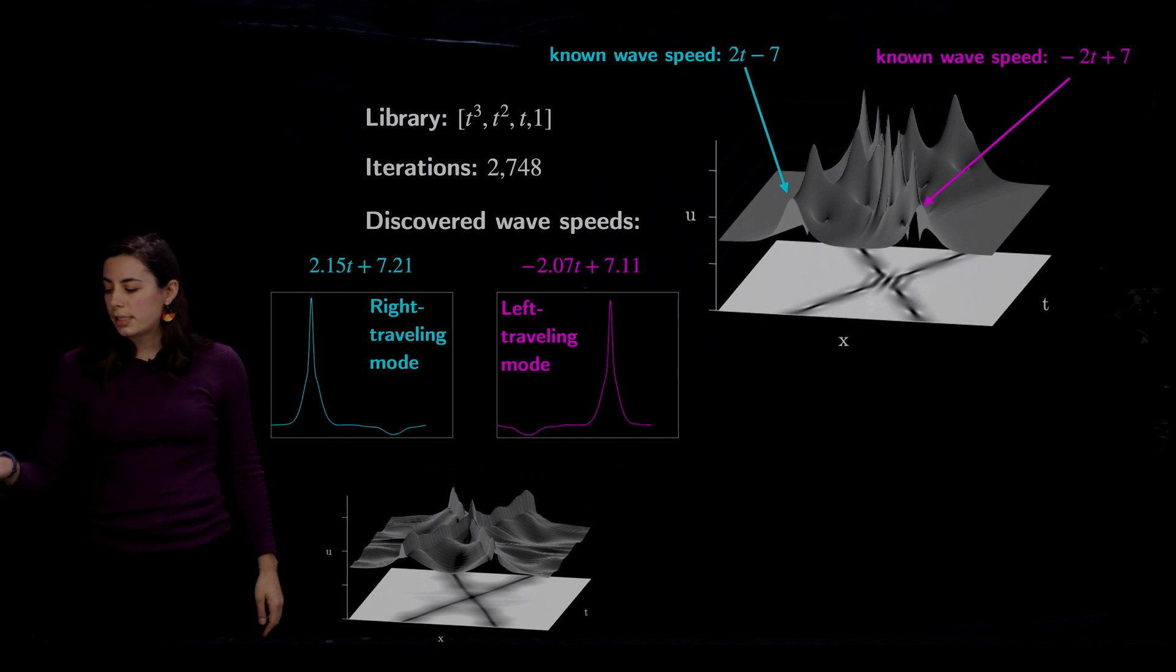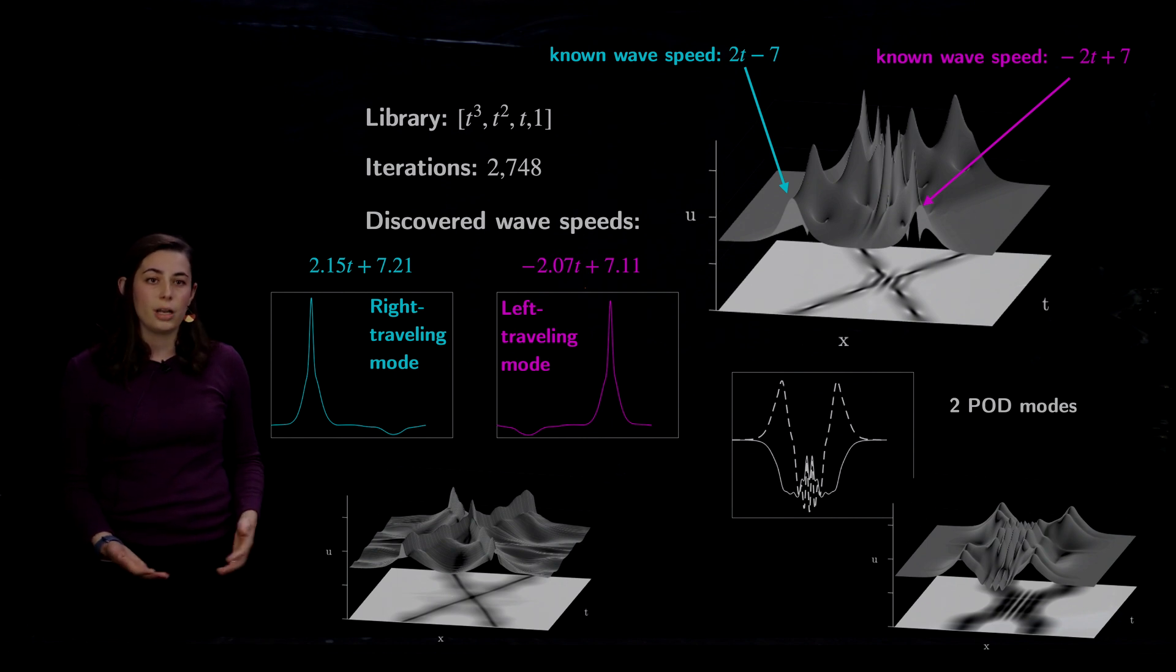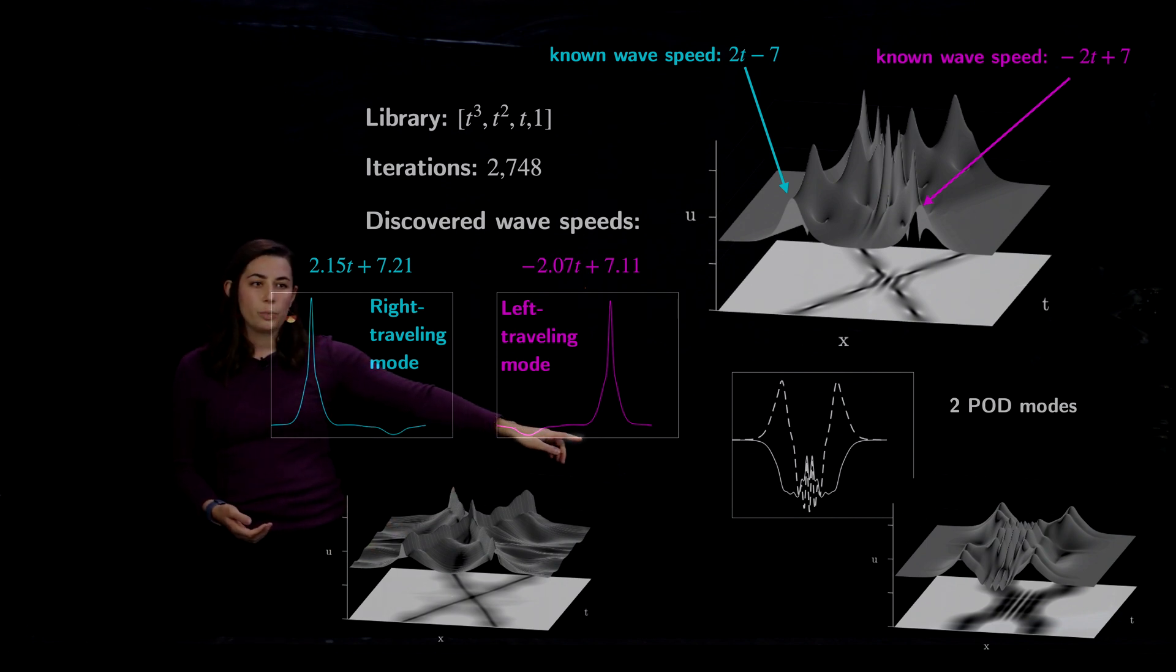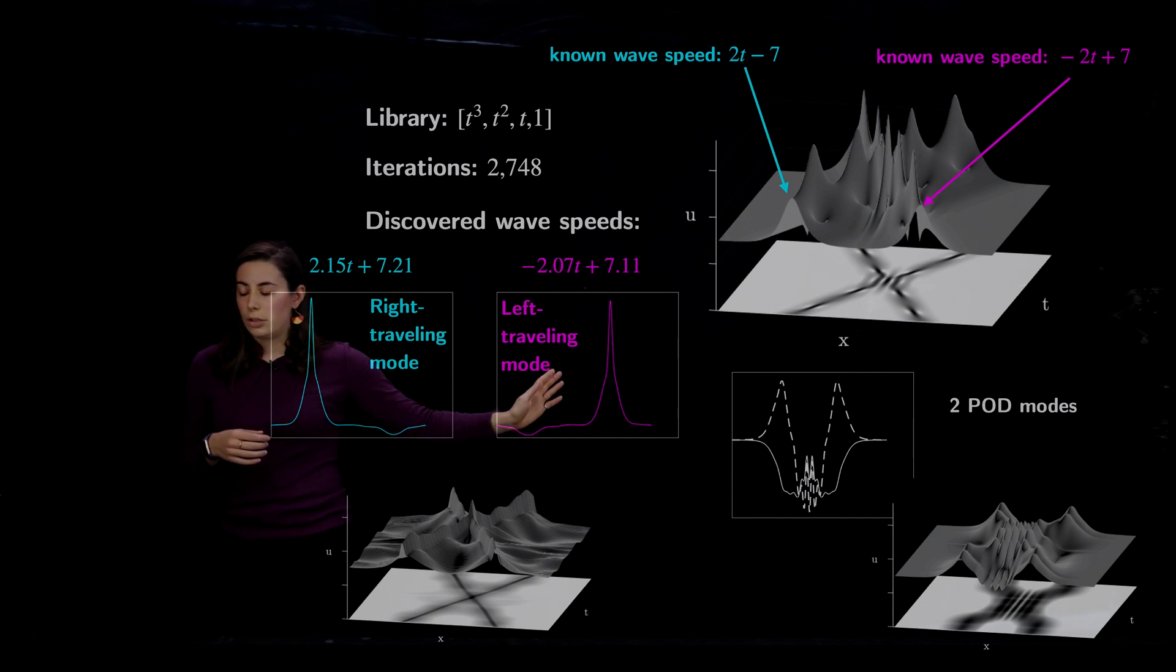I also want to contrast this with what happens when you use POD on the traditional coordinate frame as is normally done. And we have our first two POD modes shown here, which are not necessarily physically relevant. It doesn't show our two soliton waves that are contrasting each other. And then the reconstruction is also not faithful to the original.